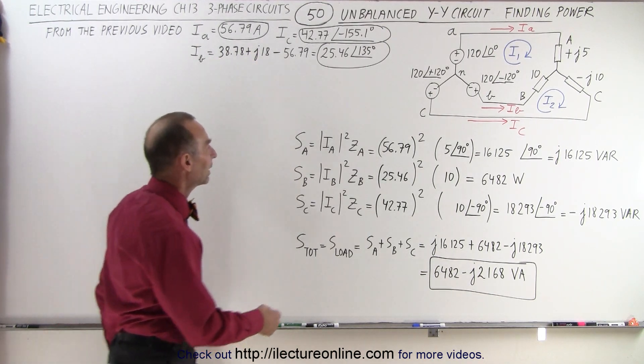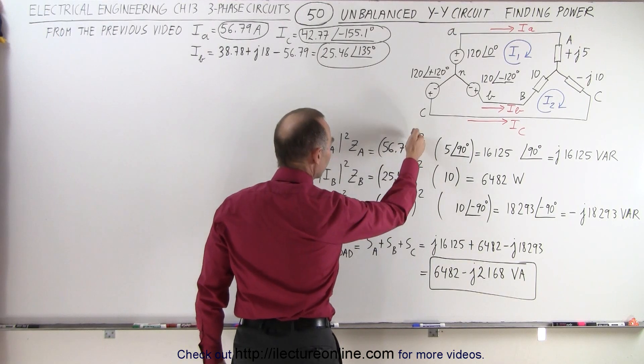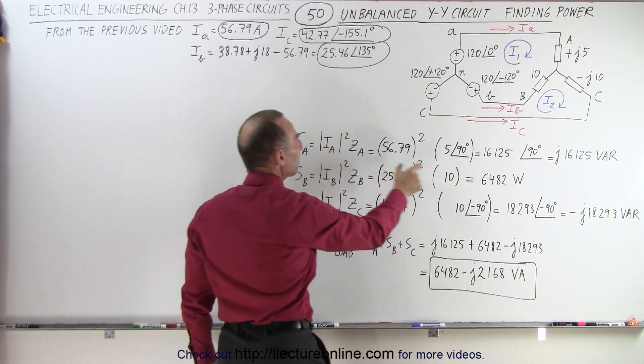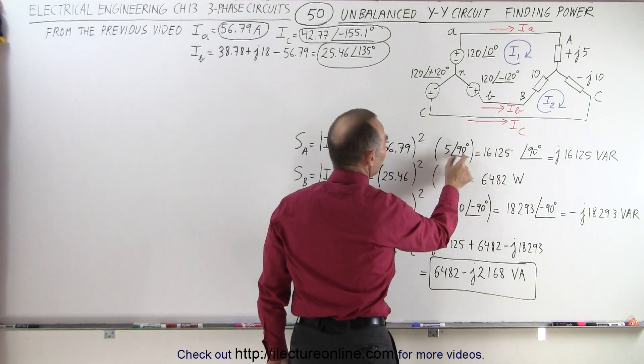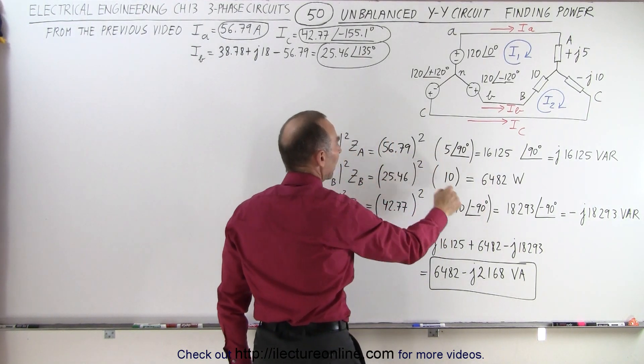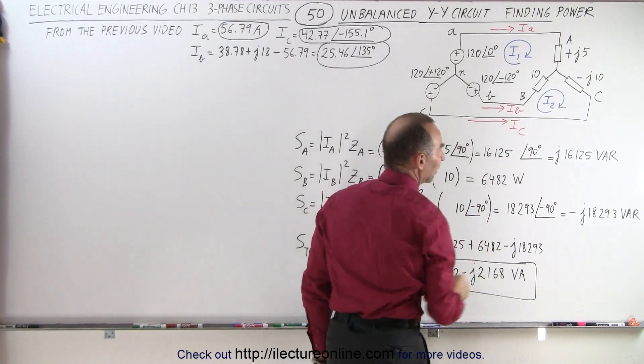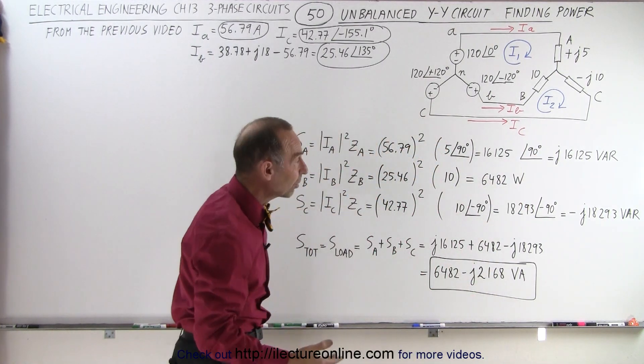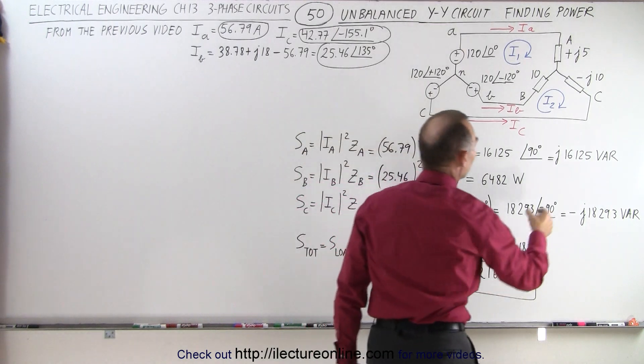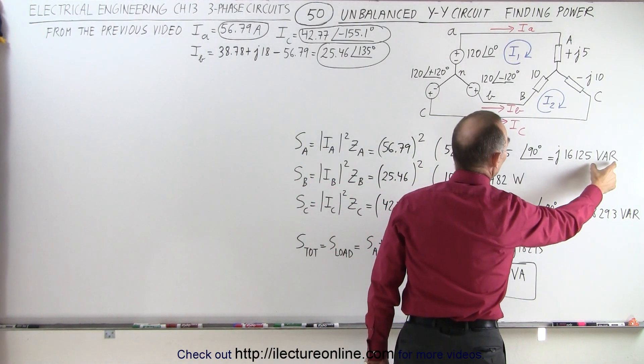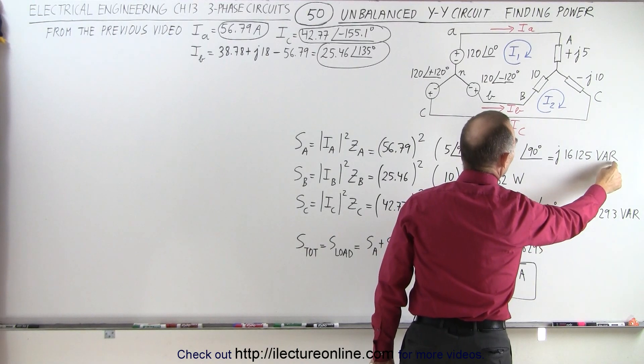So we take I_A and square it. Notice there's no phase angle because we only want the magnitude squared, times the impedance. The impedance does have a phase angle, so when we multiply, we have a magnitude with phase angle pointing in the upward direction. That means it's purely inductive, so we have a total power of 16,128 VAR (volt-ampere reactive).